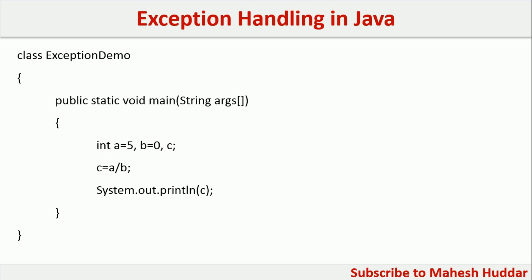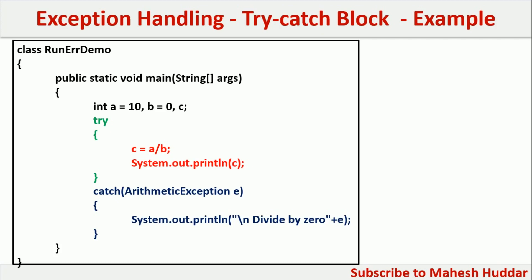In Java, we use mainly two blocks: try and catch. In the try block, we put all those statements which may behave unusually. In this case, these are the two statements which may behave unusually based on the value of a and b. Because of that, we put these statements in the try block, and whenever they behave unusually, we should have an associated catch block to handle that particular exception.